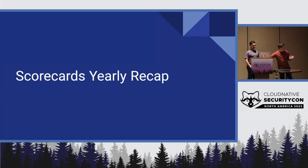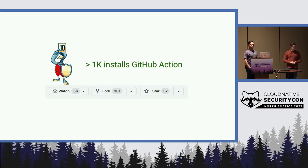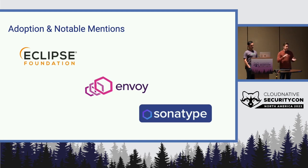Just to give folks a sense of where this project is today: it lives within the OpenSSF, and we've had over a thousand installs of just the GitHub Action. We're seeing an increased number of people watching, forking, and starring the project. Our goal is to continue to put those trends in a positive direction. We've also had some adoption at the organizational level — Eclipse has been using this as a tool to look at how different projects can make security improvements, Envoy did some piloting and has been giving feedback to improve Scorecards, and Sonatype included Scorecards in its annual State of Software Supply Chain report.